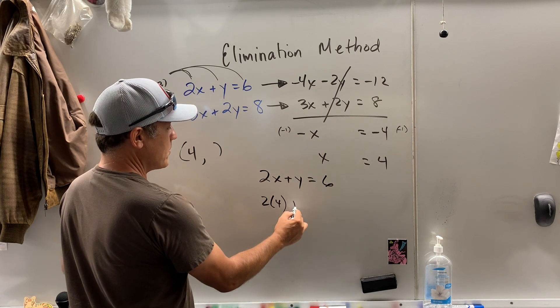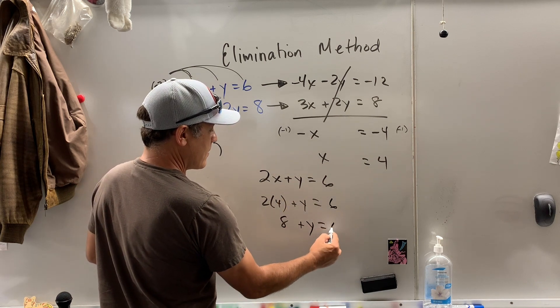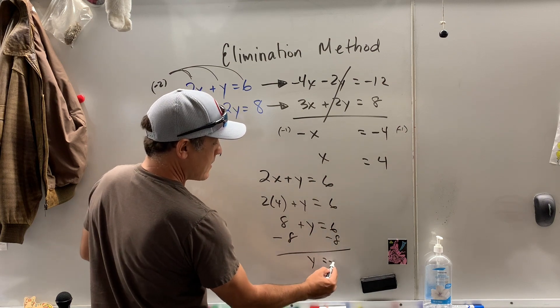2x plus y equals 6. I substitute in 4 for x there. I get 8 plus y equals 6. Subtract 8 on both sides. y equals negative 2.